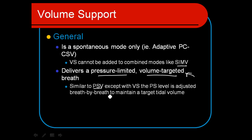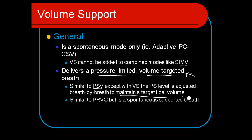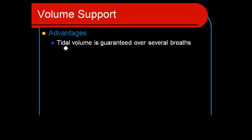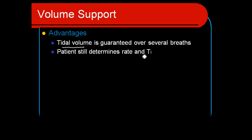Volume support adjusts breath by breath to help maintain a targeted tidal volume, doing so by increasing or decreasing the level of pressure support. Think of it as very similar to pressure regulated volume control but for spontaneous supported breaths. The tidal volume target is guaranteed over several breaths — one breath might be a little low, one a little high, but overall across 20 breaths or several minutes the volume target will be maintained.